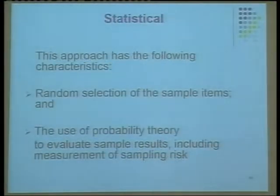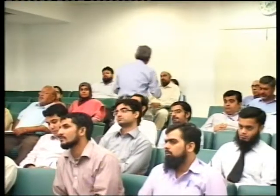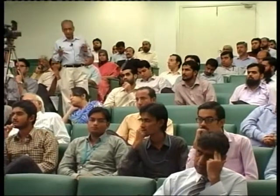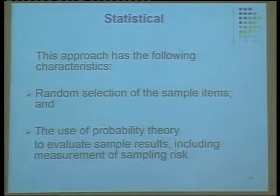For statistical sampling, two characteristics are needed: first, the selection must be at random; and second, the results must be mathematically explained, including the quantification of sampling risk. If either of these two conditions is not met, we cannot call it a statistical sample. Statistical knowledge is needed, and while it is not that difficult, many people avoid it. There are also deficiencies in statistical sampling — in fact, non-statistical sampling can give you better results than statistical sampling.